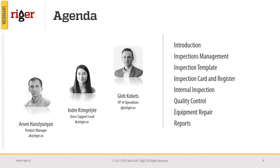Here is a quick overview of what we are going to discuss today. We will talk about inspections management — in particular, inspection triggers, equipment statuses, and inspection workflow. You will learn more about inspection templates, inspection cards, repair tickets, and how Rigor handles pre and post job inspections, quality control and repairs. You will also see what repair reports can be generated in Rigor.